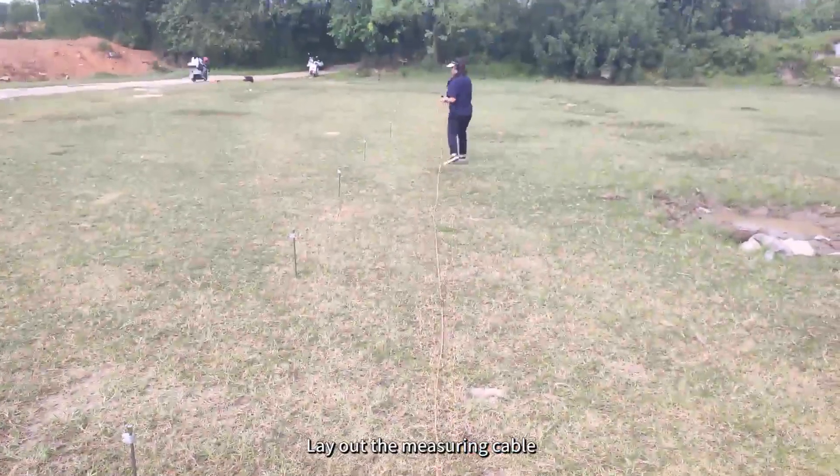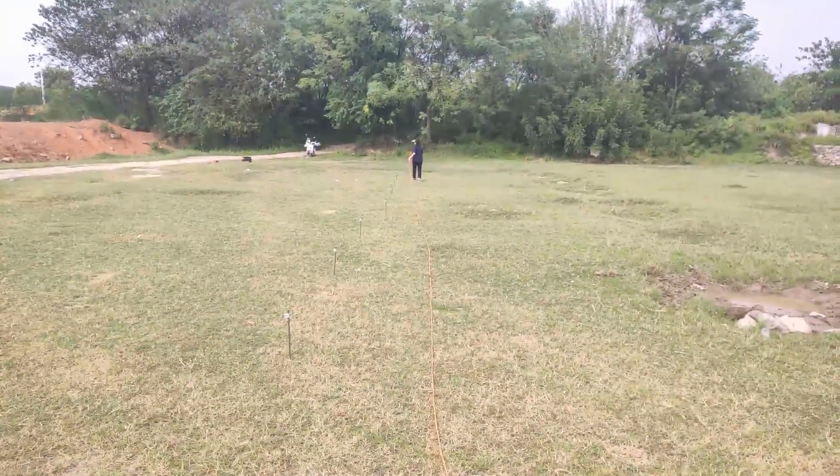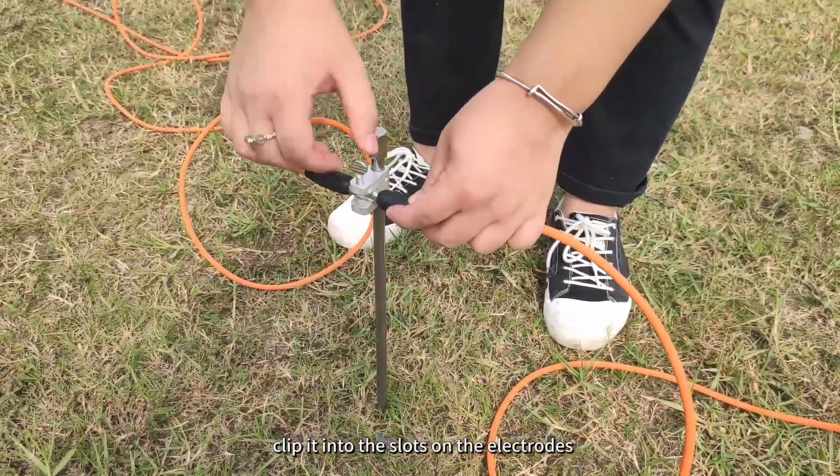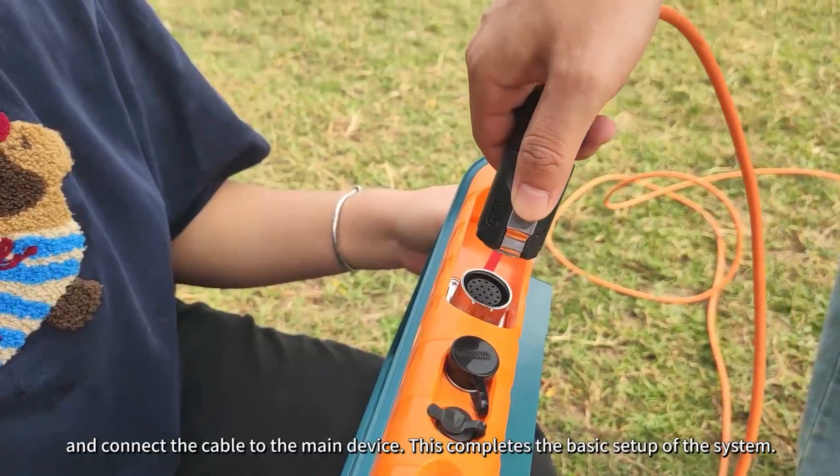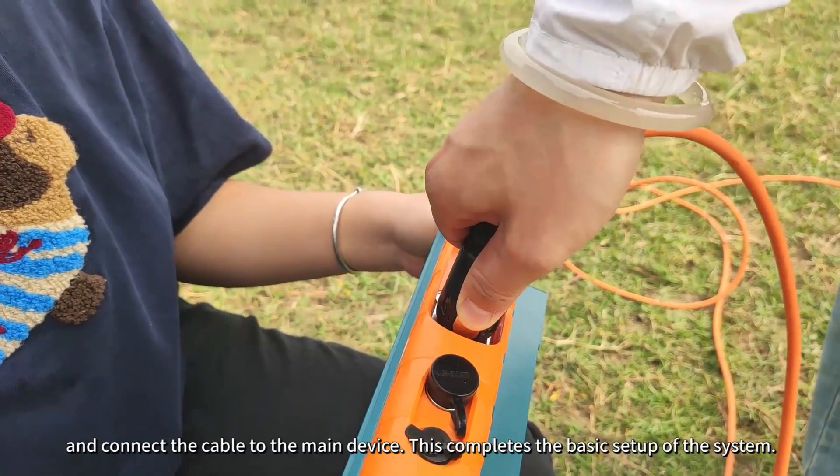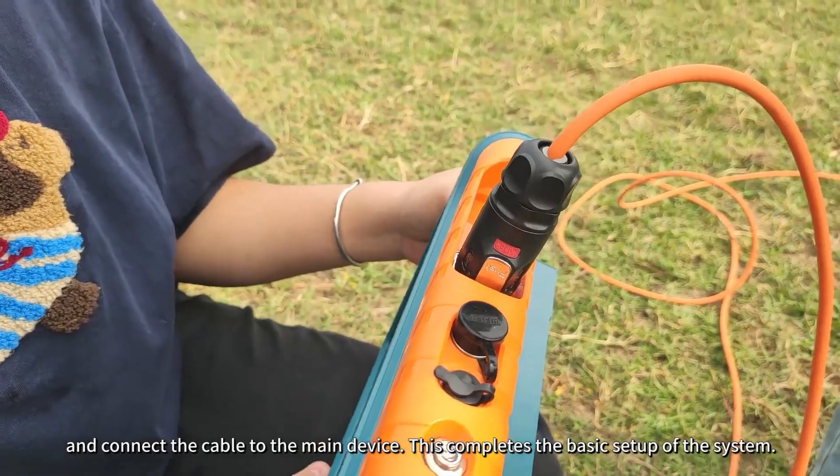Lay out the measuring cable, clip it into the slots on the electrodes, and connect the cable to the main device. This completes the basic setup of the system.